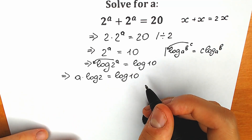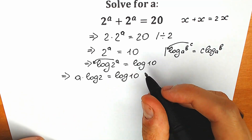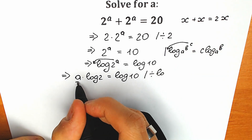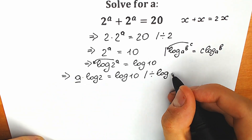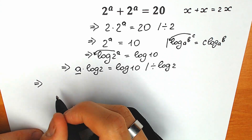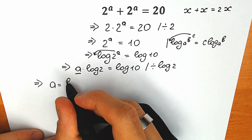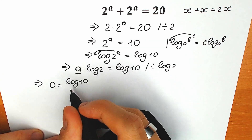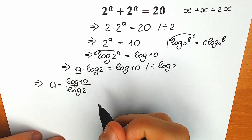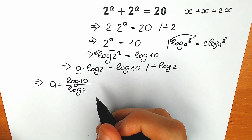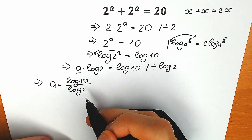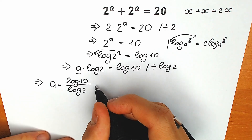The final step: let's divide both sides by log 2, because we need to find only our a. So a equal to log 10 over log 2. A lot of students might say this is our final answer, and yes, this is correct — this is our answer. But we can simplify this a little bit.